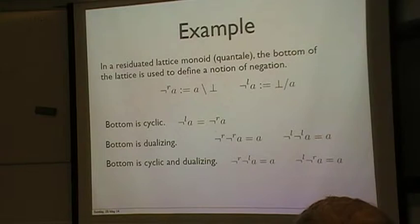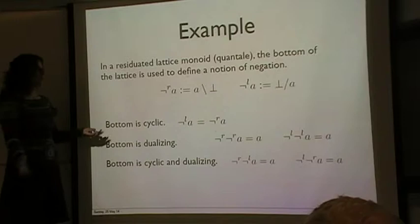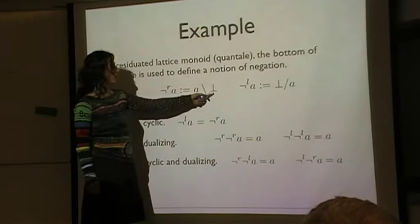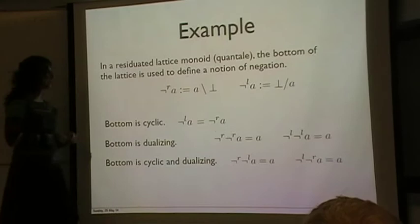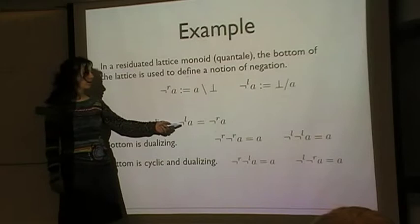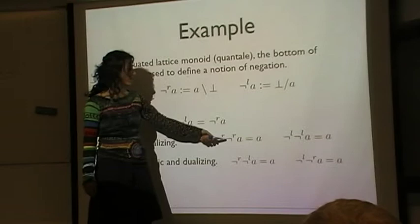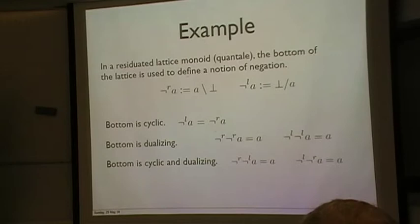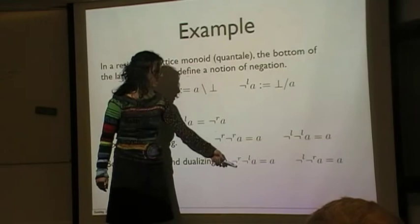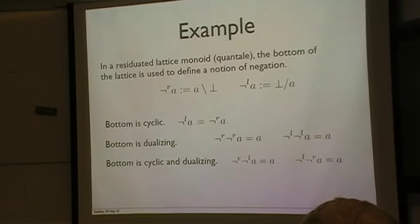Okay, so in a residuated lattice monoid, which is something that's also called a quantale, when the lattice is complete, the bottom of the lattice is usually used to define a notion of negation. I think you've all seen this before. So right implication by bottom gives you a right negation and left implication by bottom gives you a left negation. And then bottom being cyclic means that the left and the right negations are the same. That's what it means. Bottom being dualizing means that the same sign negations cancel out. So left left A is equal to A. Right right negation of A is equal to A. Bottom being cyclic and dualizing means that all these negations also cancel out. This translation is very important.